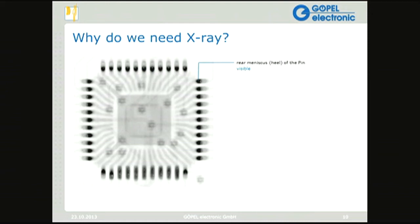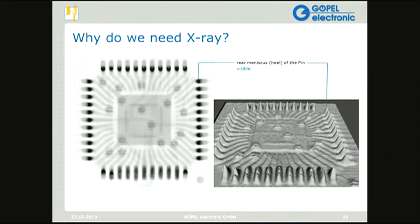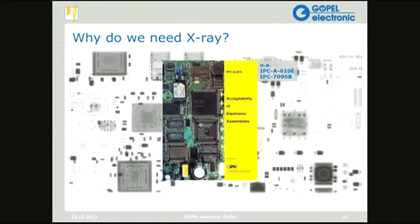Here we can see the rear meniscus — or heel — of the solder joint, which is quite dense and stands out. In the front row you can see many pins that appear harmonious or all one color across; if they look like that, the interpretation is that they are lifted leads — not actually soldered to anything. With the top-of-view image at the front you can't see any heel definition at all. Quite simply, X-ray ensures an IPC-compliant inspection.